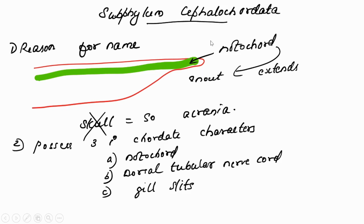To simplify: in Cephalochordata, the notochord extends towards the anterior end in the form of a snout — that is why it got the name Cephalochordata. In this case, the brain is not covered with a skull, so it is also called Acrania. 'A' means absent; cranium is absent.